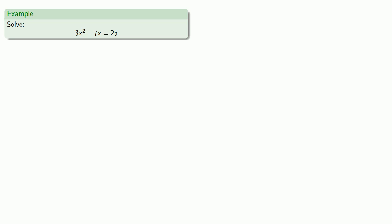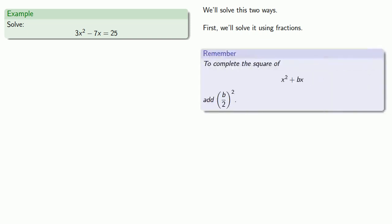Let's contrast this to our traditional method. So say we want to solve 3x² - 7x = 25. We'll solve this in two ways, and first we'll solve it using fractions. And so we can mindlessly remember the formula to complete the square of x² + bx, add (b/2)². And so our first step is getting this expression on the left-hand side into the form of x² plus something. And so we have to divide everything by 3.